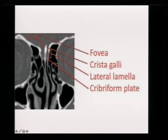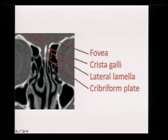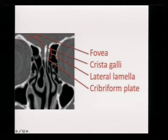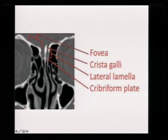In CSF leak cases, important anatomy includes the cribriform plate and the middle turbinate. Medial to the middle turbinate is the cribriform plate, so a leak from the cribriform plate is medial to the middle turbinate. You only need to work medial to the middle turbinate — posterior ethmoid cells need not be disturbed. If the defect is in the lateral lamina or fovea ethmoidalis, various places can have CSF leak; find out which structure is involved and act accordingly.